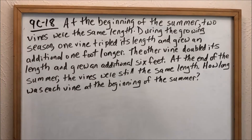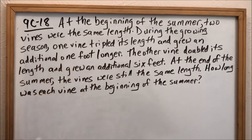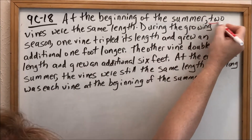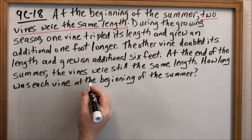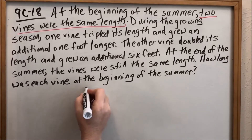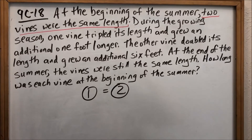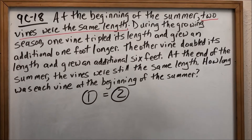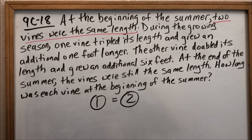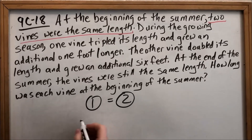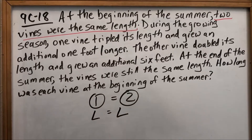We're looking at 9C18 — applying solving for unknowns to a word problem. At the beginning of the summer, two vines were the same length. That's a key phrase: two vines were the same length at the beginning, meaning vine one was equal to vine two. At the end, it asks how long each vine was at the beginning. So we assign a variable — let's use L for how long they were.